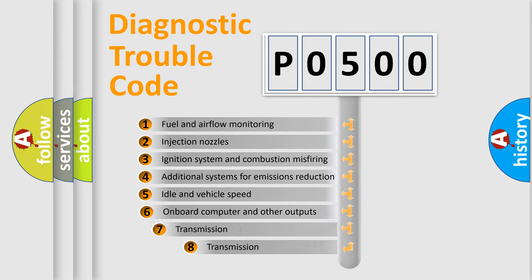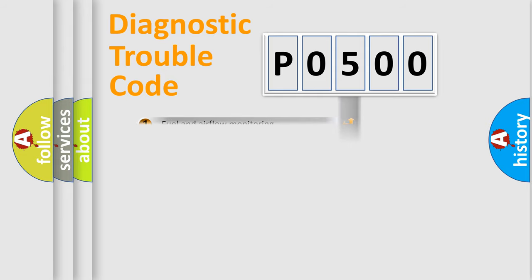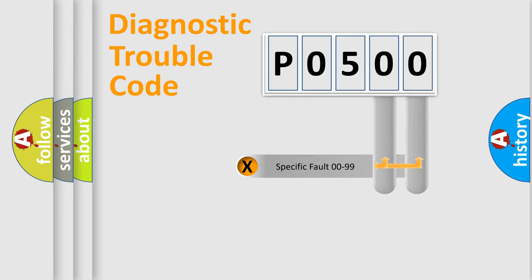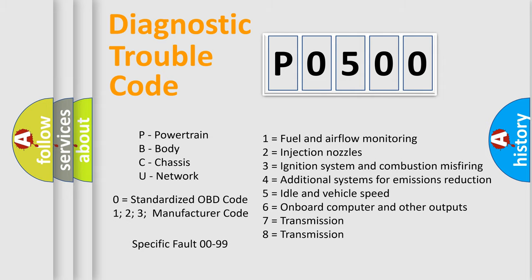The third character specifies a subset of errors. The distribution shown is valid only for the standardized DTC code. Only the last two characters define the specific fault of the group. Let's not forget that such a division is valid only if the second character code is expressed by the number zero.